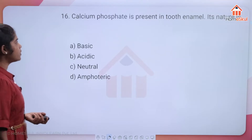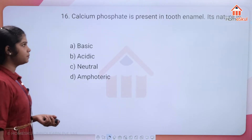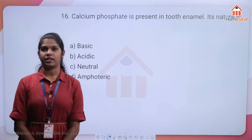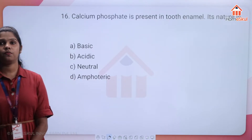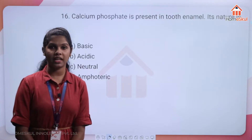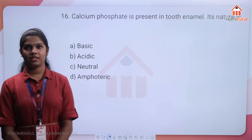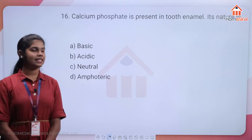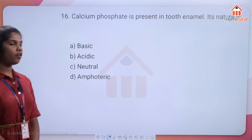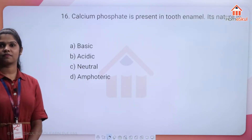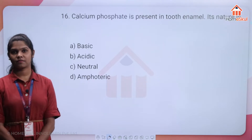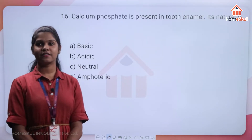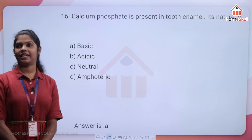Question 16: calcium phosphate is present in tooth enamel. What is its nature — acidic, basic, neutral, or amphoteric?